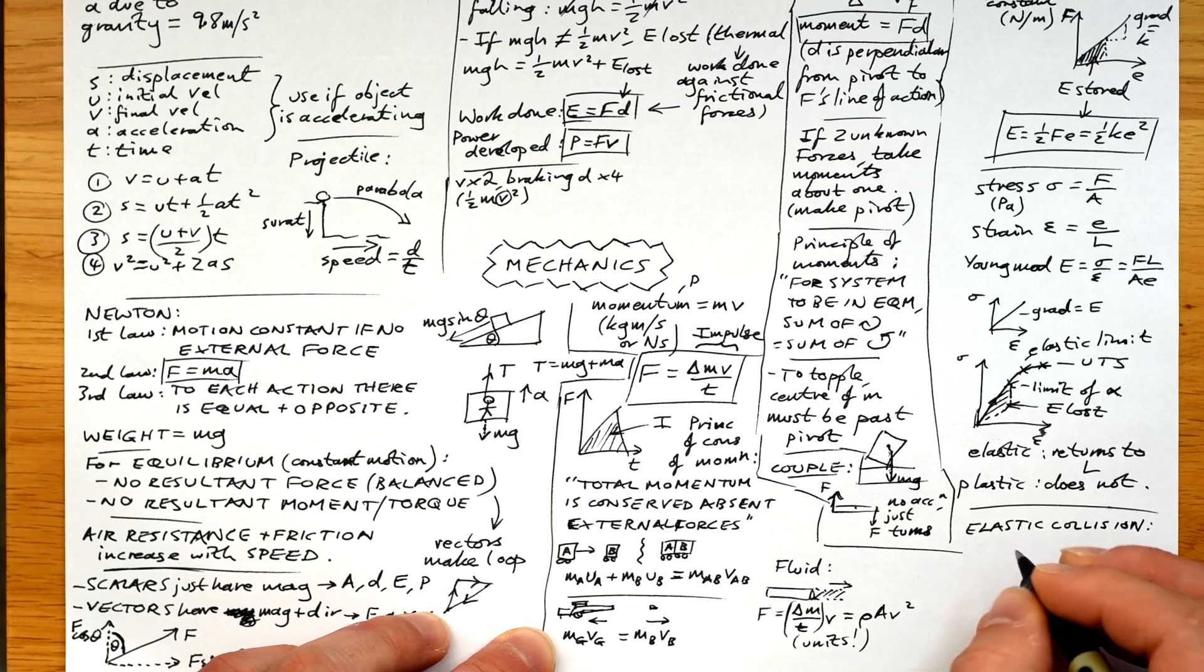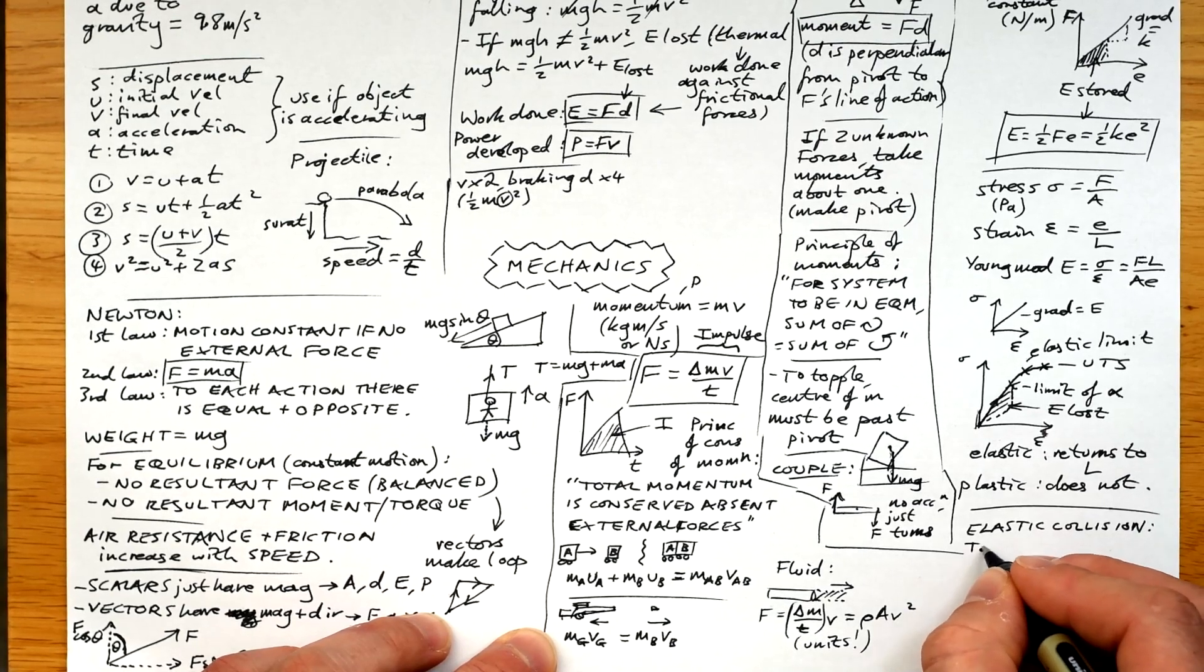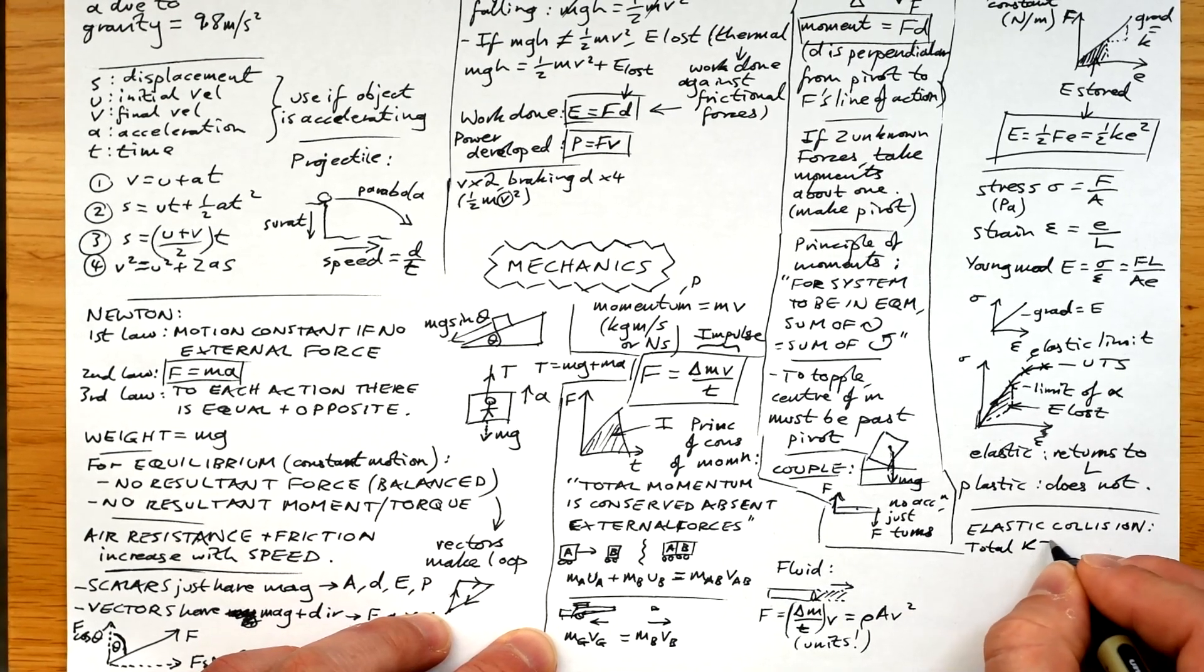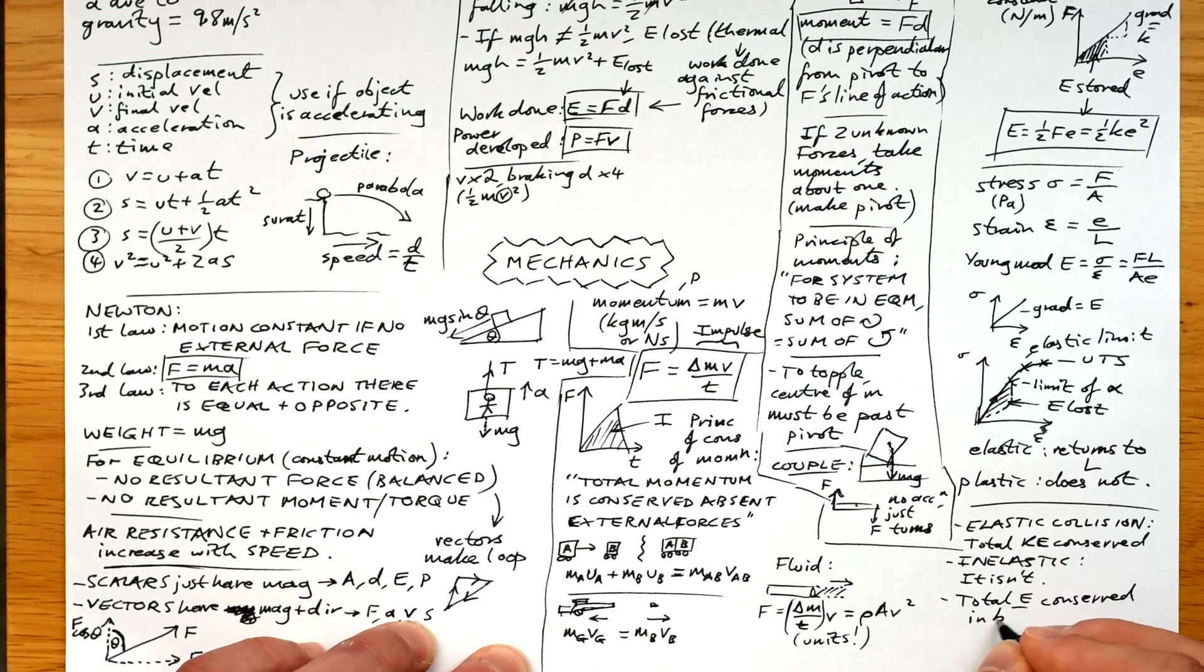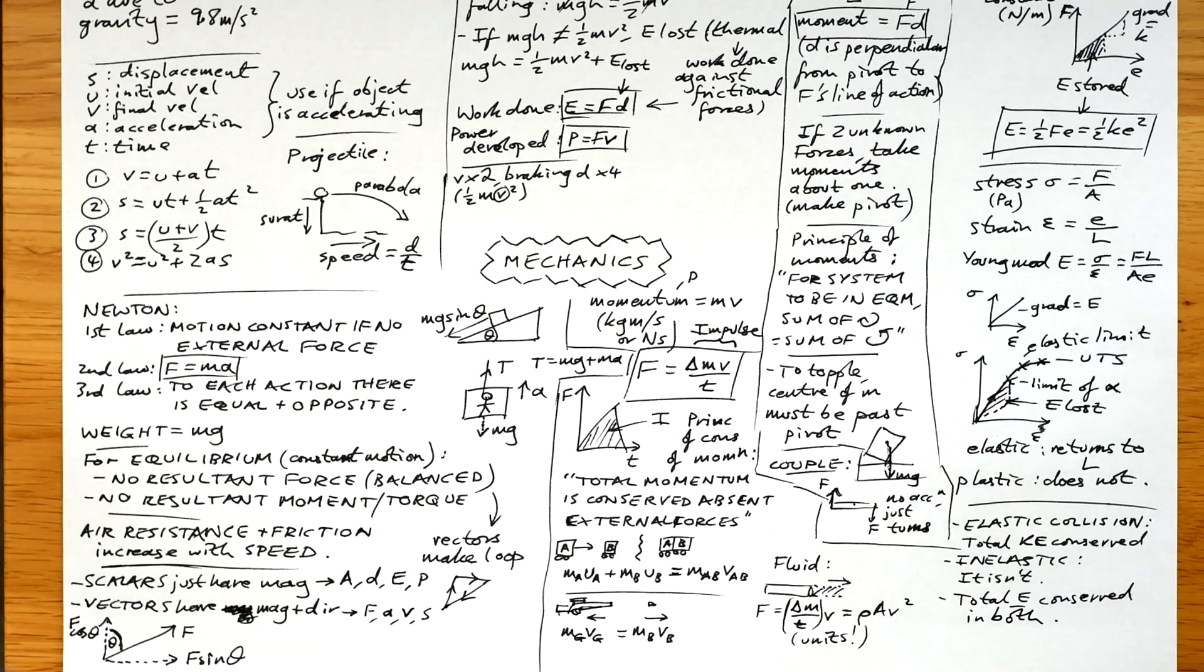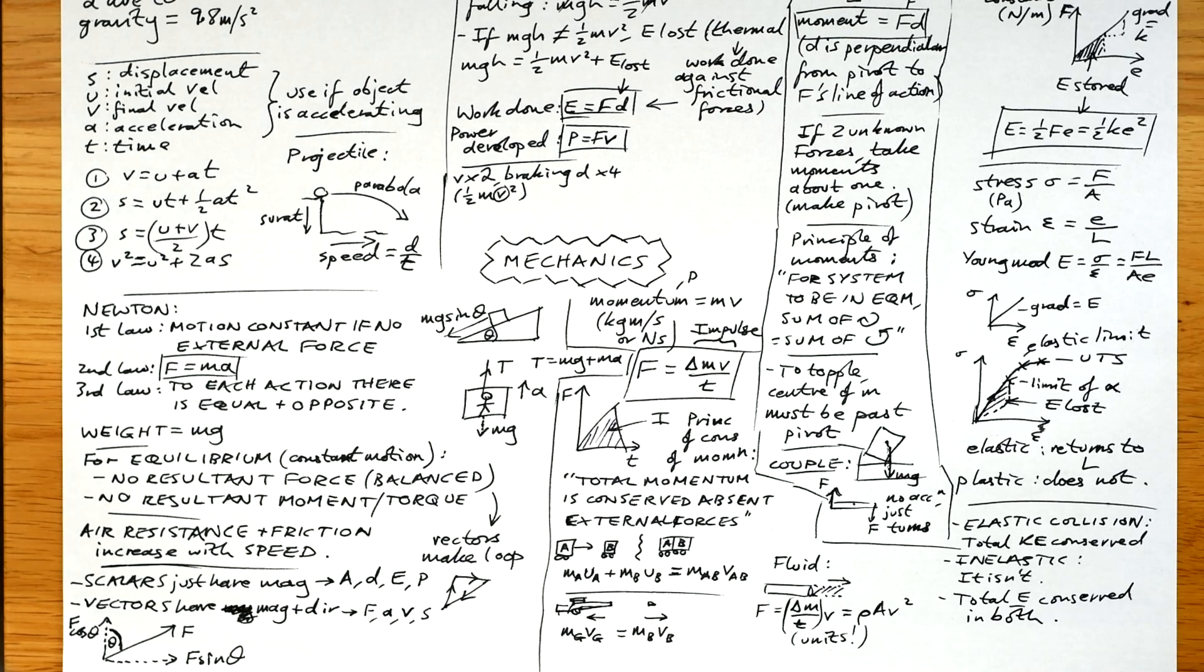And we have two types of collision. We have elastic collisions and inelastic collisions. For elastic collisions, total kinetic energy is conserved and it's not in inelastic collisions. But don't forget that total energy is conserved in both. Total energy is always conserved.